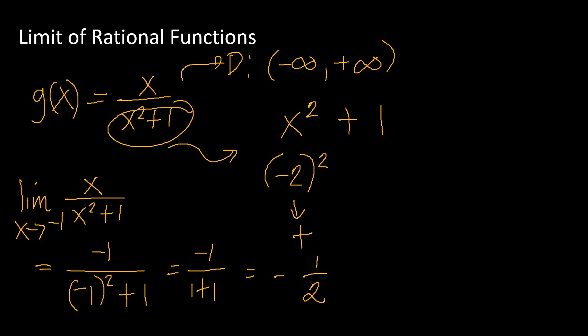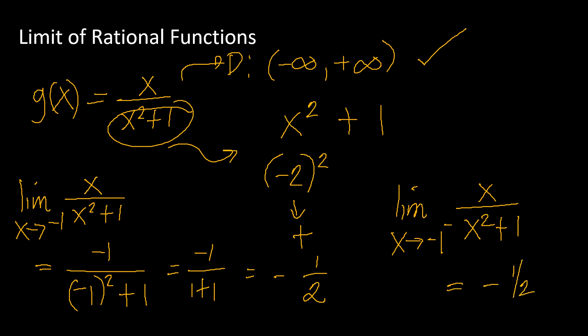Since the domain is the set of all real numbers, there are no restrictions — you can use any value, including left or right approaches. So the limit of x/(x²+1) as x approaches negative 1 from the left also remains negative 1/2. Because the two-sided limit exists, both the left-sided and right-sided limits are also the same — both equal negative 1/2.